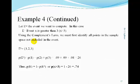So the probability of the complement of our event is equal to 0.26. Using the complement's law, the probability of the event we want is equal to 1 minus 0.26, which equals 0.74. In this example, using the complement's law greatly simplified our mathematics.